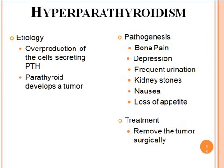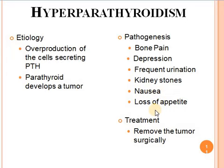Now we will discuss hyperparathyroidism, which occurs when production of parathormone exceeds normal limits. Etiology: hypersecretion of parathormone may be caused by the development of a parathyroid tumor. Pathogenesis: hypersecretion of parathormone results in excessive calcium release from bones, making them weak and causing bone pain, depression, frequent urination, and kidney stones due to higher accumulation of calcium in the kidneys. It also causes nausea and loss of appetite. Treatment: hyperparathyroidism may be treated by surgically removing the tumor from the parathyroid glands.